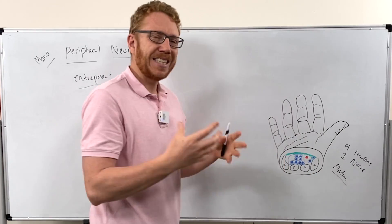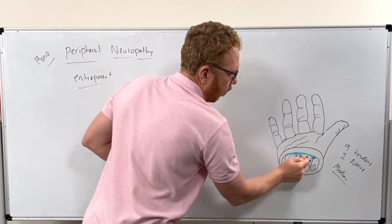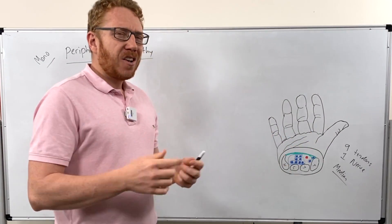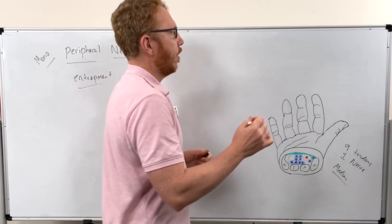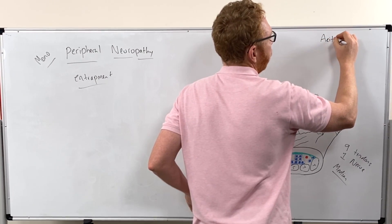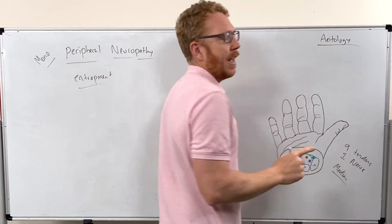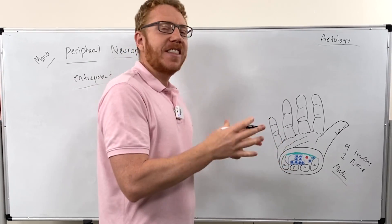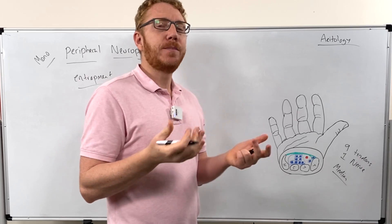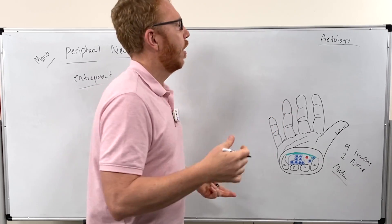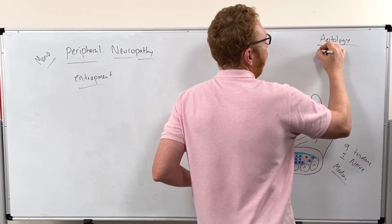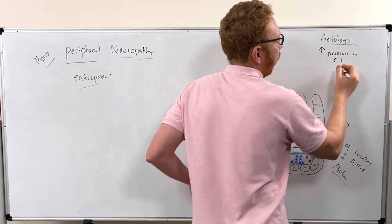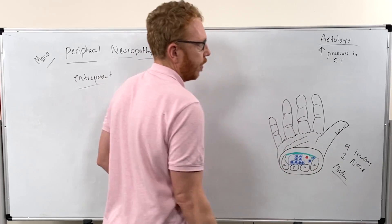We know where the median nerve is, and we understand the definition — a neuropathy of that nerve being entrapped in the tunnel. Now we can figure out the etiology. The cause is technically idiopathic; they're not 100% sure. Generally the literature assumes it's multifactorial, but it's probably due to an increased pressure in the carpal tunnel.